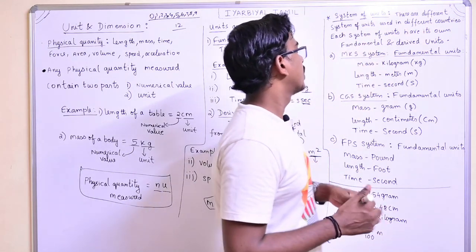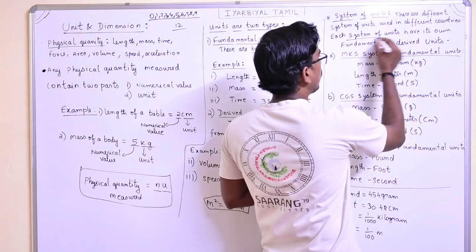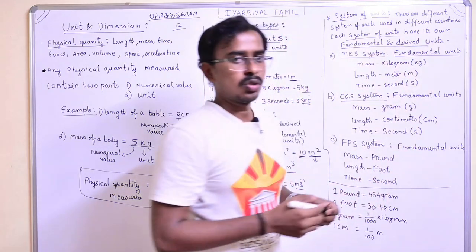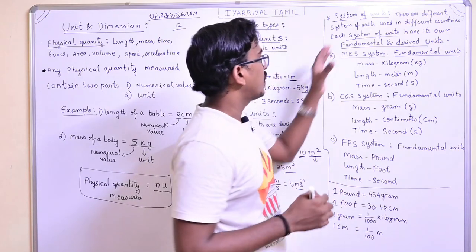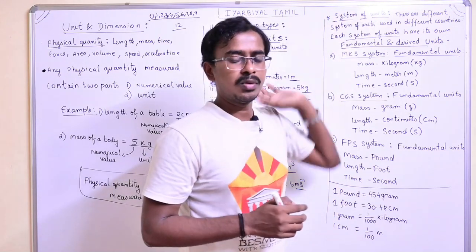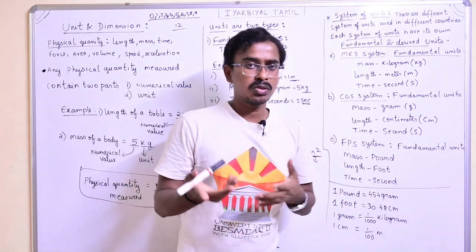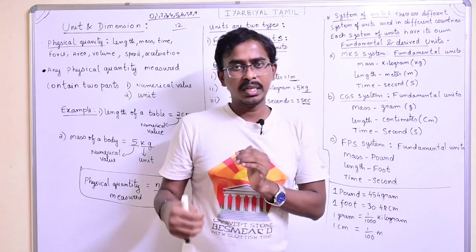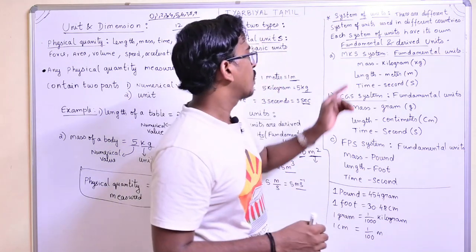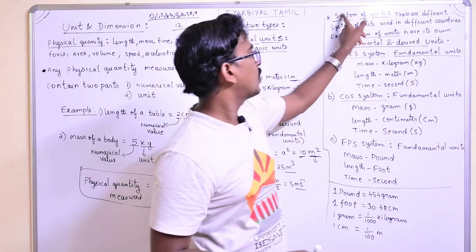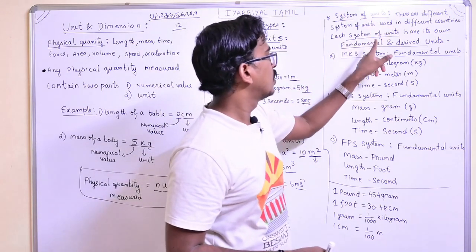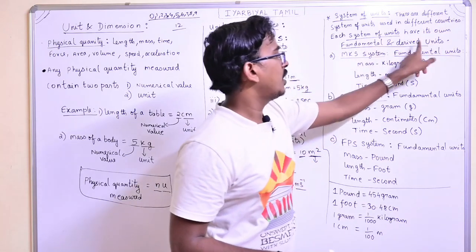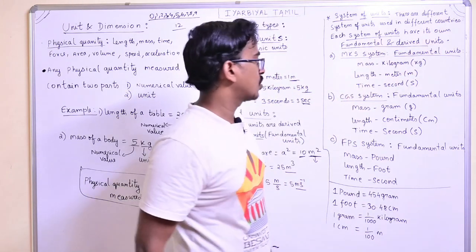Each system of unit has its own fundamental and derived units. So, if I take a system of unit, each system of unit has its own fundamental and derived units. For example, if we look at the MKS system — there is a system of unit where M represents meter, K represents kilogram, and S represents seconds.